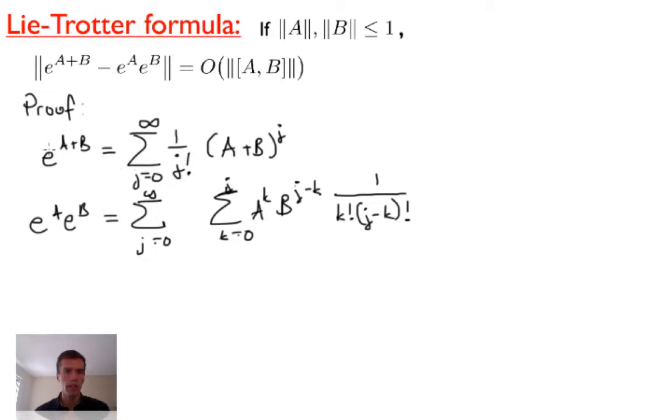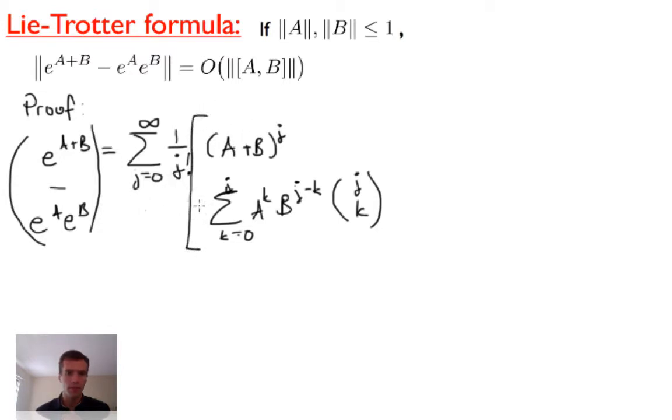To make this look like the e^(A+B) expression, let me pull out 1 over J factorial in front, multiply by J factorial here. Then this term is just J choose K. So we can simplify the difference between these terms: e^(A+B) minus e^A e^B. Both expressions start with sum from J=0 to infinity of 1 over J factorial, so you can factor that out. We get (A+B)^J minus this second sum here.